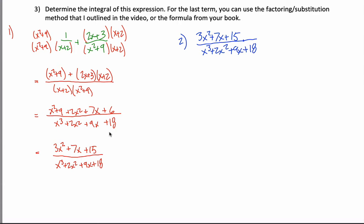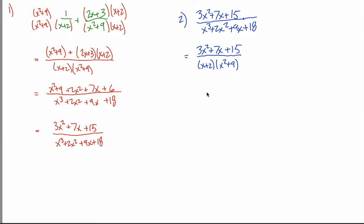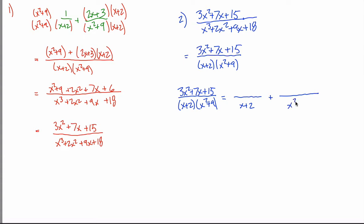I'll begin step two by copying what I ended up with in step one. The first step is to factor the denominator. Rather than think about how to factor it, you can just recognize that the denominator came from x plus two times x squared plus nine, so it must factor as x plus two times x squared plus nine. Now we can use partial fraction decomposition: rewrite this as a sum of two terms, with denominators x plus two and x squared plus nine respectively.